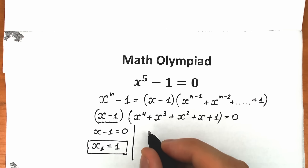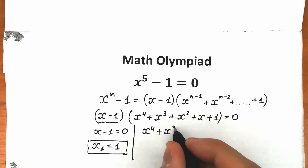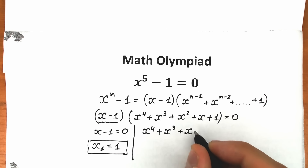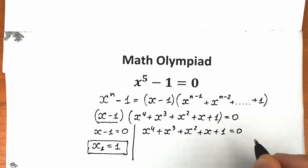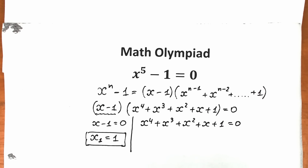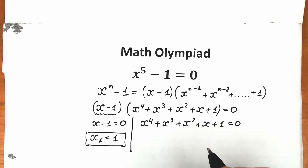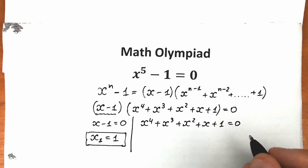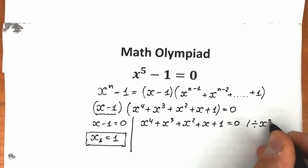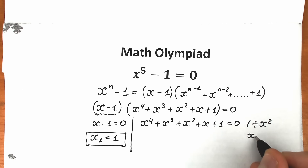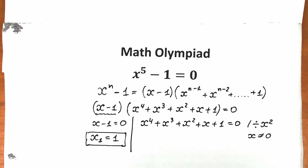Let's separate this part and solve the second parenthesis. We have x to the fourth power plus x cubed plus x squared plus x plus one equals zero. This is not a quadratic equation — that's a bad moment — but I'm going to show you a really great trick. First of all, let's divide both sides by x squared. We can do this because x is not equal to zero.